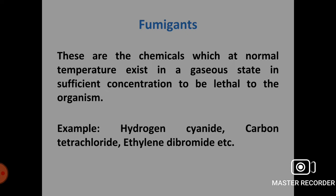Fumigants are chemicals which at normal temperature exist in a gaseous state in sufficient concentration to be lethal to organisms. Hydrogen cyanide is evolved from calcium cyanide and is blown directly into rodent burrows; it is very toxic to humans so it is used only in vacant areas. Carbon tetrachloride is a quick-acting fumigant which kills rats in their burrows. Ethylene dibromide is a highly toxic fumigant to be used in fields but never in houses.